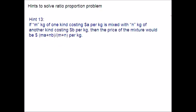One last hint: this hint will be helpful when dealing with quantity increase or decrease. If one quantity increases or decreases in the ratio A is to B, then the new quantity is B times the original quantity over A — that is, Bx over A. Hope you are clear with all the hints discussed in this session. If you have any queries, please reach out.